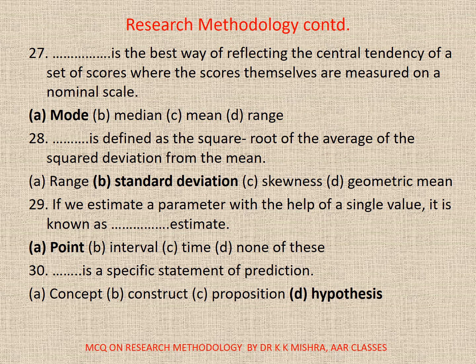Question 27: Dash is the best way of reflecting the central tendency of a set of scores where the scores themselves are measured on a nominal scale. A. Mode. B. Median. C. Mean. D. Range. Correct option is A. Mode.